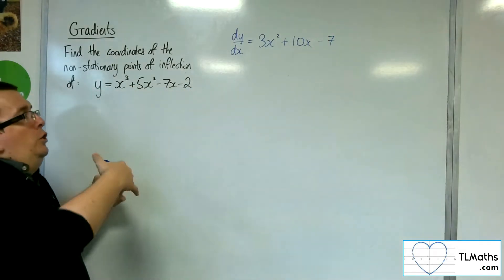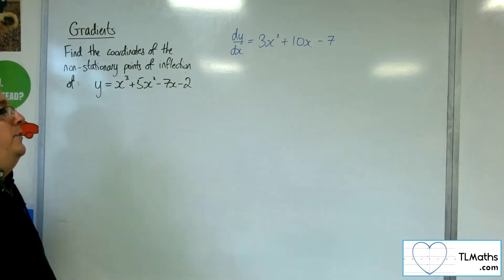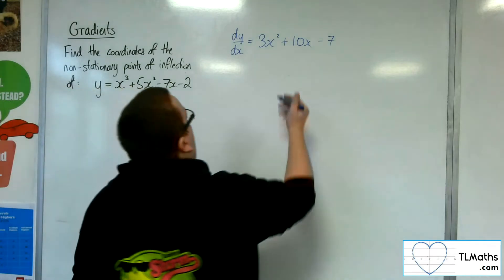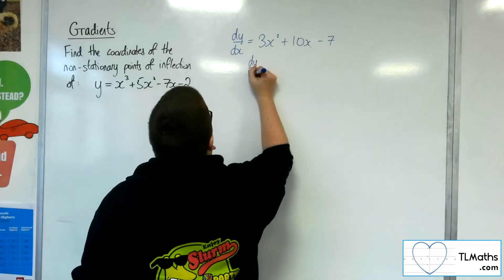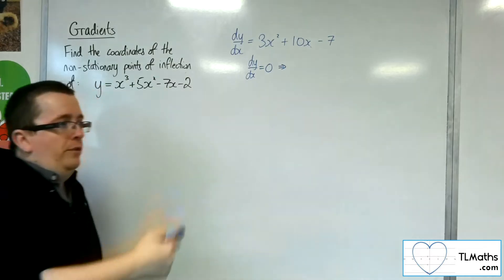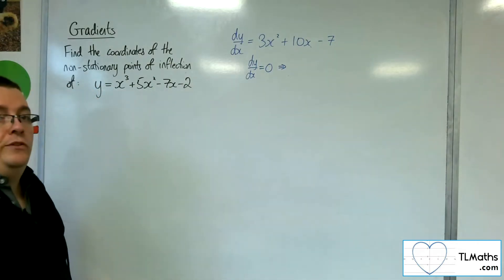You could go straight on and find the second derivative, but I'm going to find the stationary points of this curve first. And the reason why I would do that is that I want to make double check that any non-stationary points of inflection that seem to be identified aren't stationary points themselves.